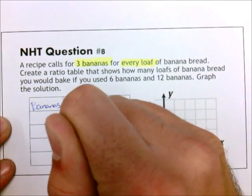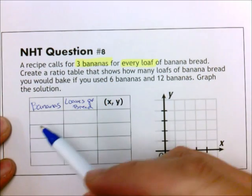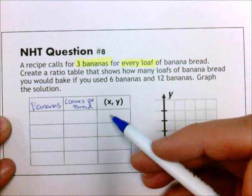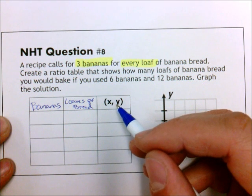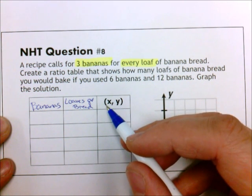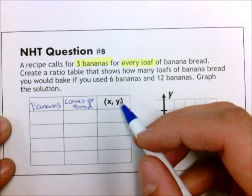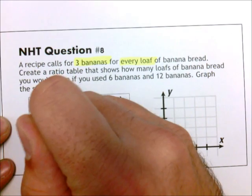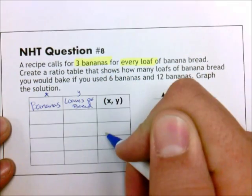This third column here is for my graph later on. These are ordered pairs. We know that an ordered pair is going to be a parenthesis, your x comma y. And what's nice is the way I wrote this, the first one is going to be your x, the second one here will be your y.